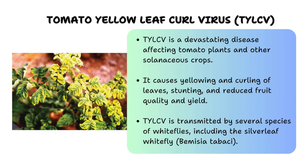Whiteflies act as vectors for the transmission of Tomato Yellow Leaf Curl Virus, commonly abbreviated as TYLCV — a devastating pathogen that affects tomato plants. When whiteflies feed on infected plants they acquire the virus, which replicates within their bodies. Subsequently, as they move to feed on healthy plants, they transmit the virus through their saliva, introducing it into the plant's vascular system. Once inside, TYLCV causes yellowing and curling of leaves, stunted growth and reduced fruit production. This transmission cycle underscores the importance of implementing effective control measures to manage both the vector and the disease.